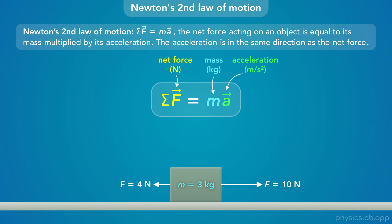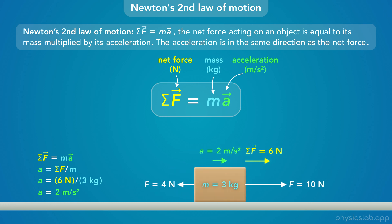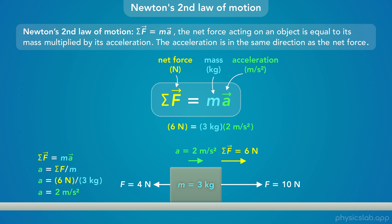Let's put these things together. This box has a mass of 3 kilograms. There's a 10-newton force to the right and a 4-newton force to the left, so the net force is 6 newtons to the right. Newton's second law says the acceleration equals the net force divided by mass: 6 newtons divided by 3 kilograms gives 2 meters per second squared. The net force, mass, and acceleration are all related through this equation.